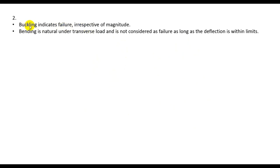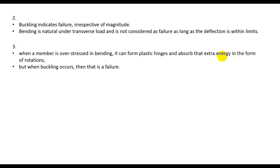Buckling indicates failure — when buckling occurs, it represents that the building or that portion will collapse, irrespective of magnitude. Bending, on the other hand, is natural under transverse load. When bending occurs, it does not mean the building will crack or collapse. It is considered failure only when the deflection exceeds its limits; as long as deflection is within limits, the structure is not considered to be failing.